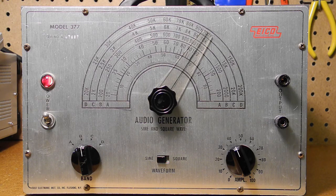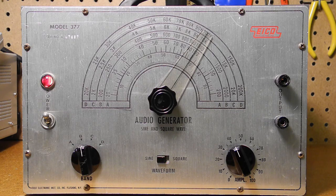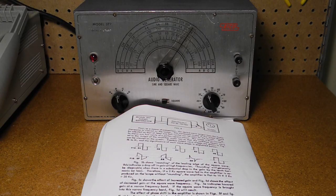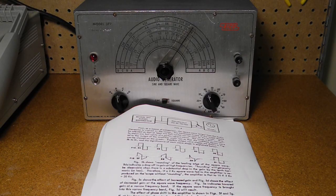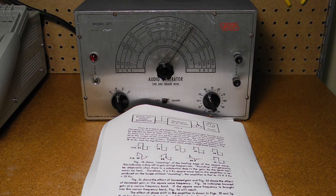It uses a Wien bridge oscillator circuit that uses a lamp to regulate the level of feedback. The manual is very complete and covers applications, theory of operation, calibration and maintenance, and the circuit schematic.